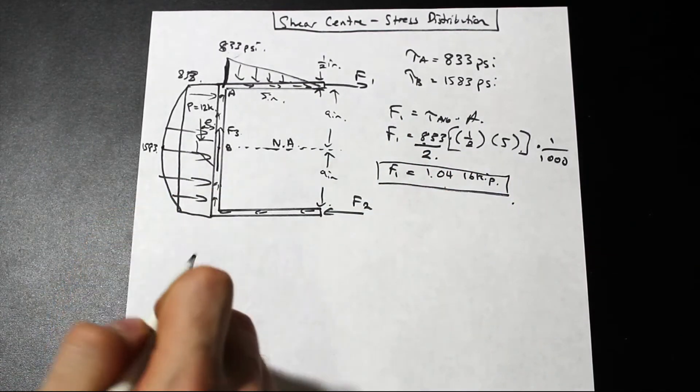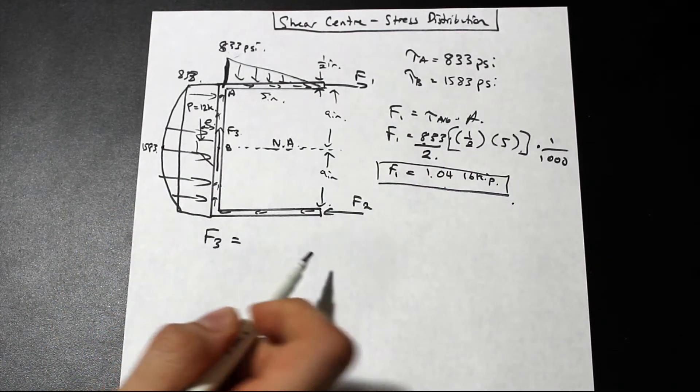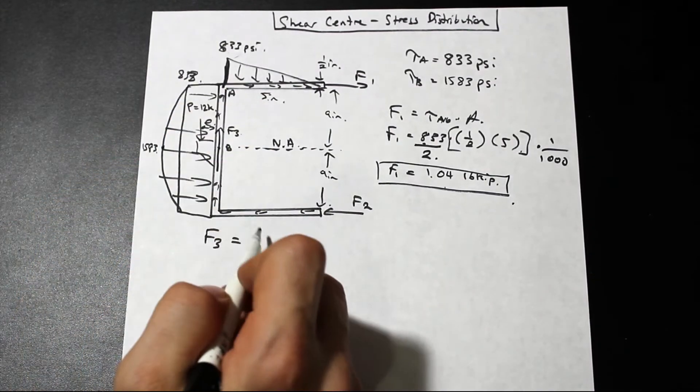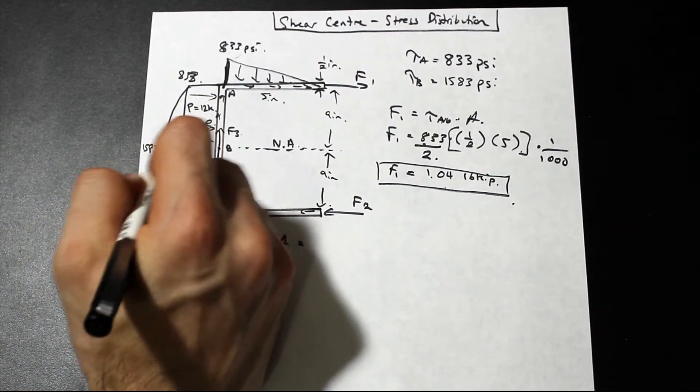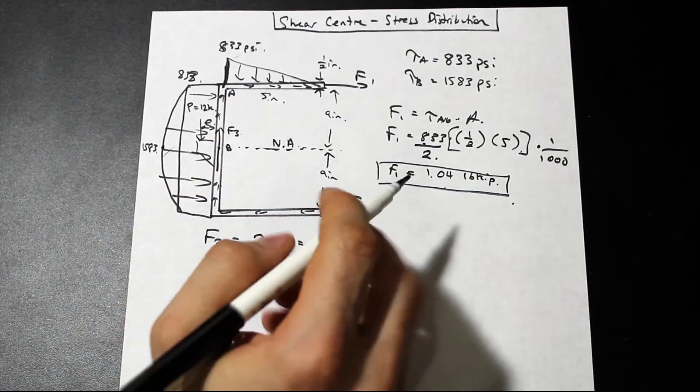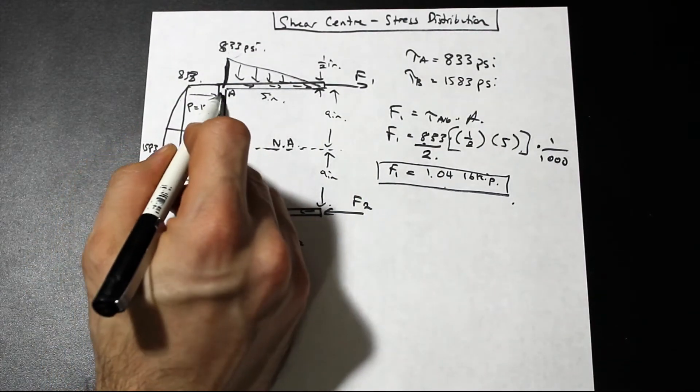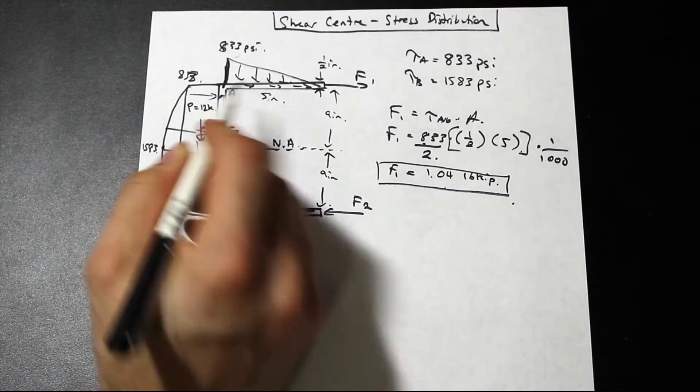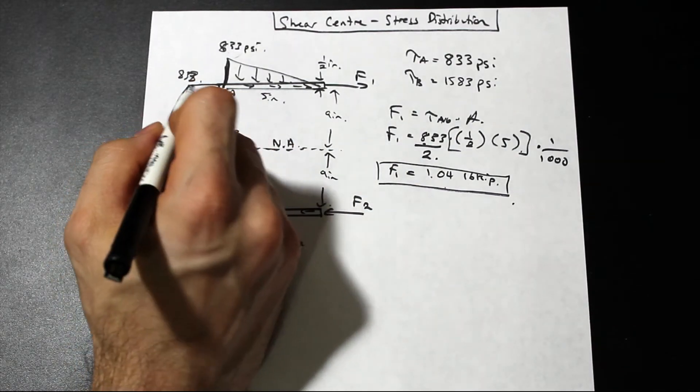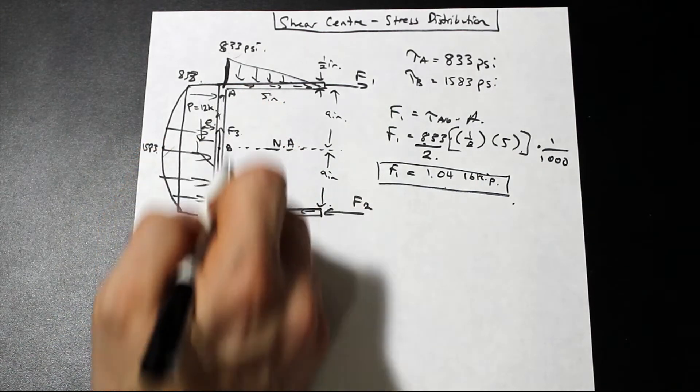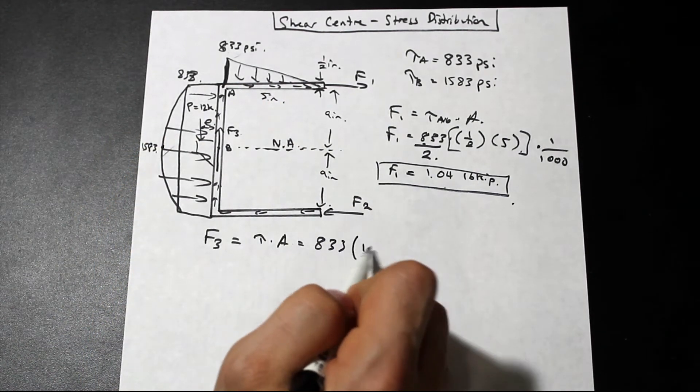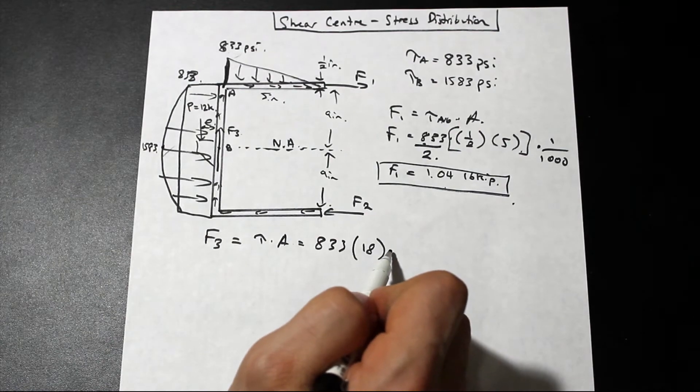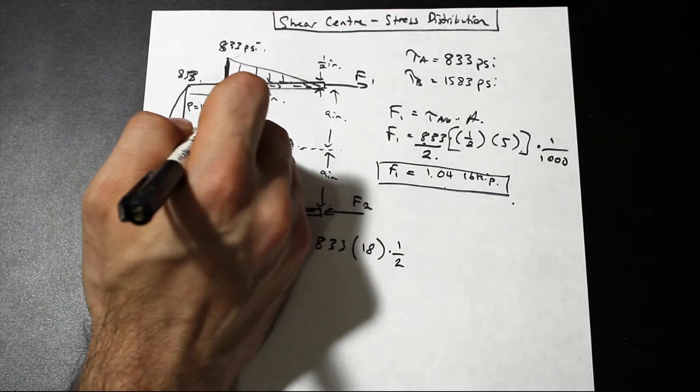Let's take a look at F3 here, okay? So if we take a look at F3, all right, now actually we have tau A, okay? So tau here is actually the entire area under this stress diagram, okay? So that's going to, and then that's going to be multiplied by the area of the web. So let's go ahead and do that. So we have two portions. We have this rectangular portion times this distance, so we have 833 times 18, and that's going to be times one half, right? The thickness of this.